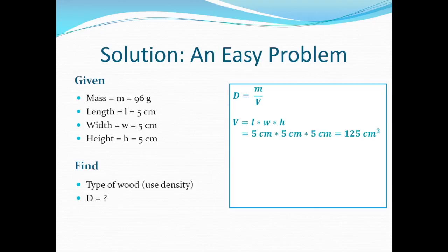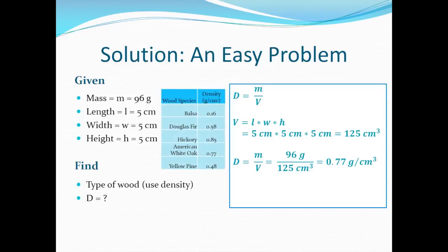Remember to always put your units. This will help you make sure you're using the correct numbers and you have the right units. We'll write d equals m over v, which we know is 96 grams over 125 cubic centimeters, which gives us a density of 0.77 grams per cubic centimeter. If we go back to the table we were given, this is the density of American white oak.